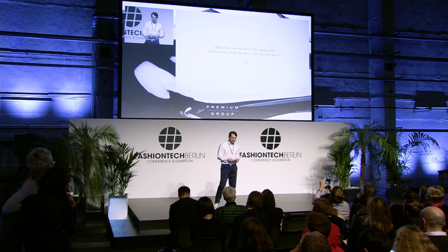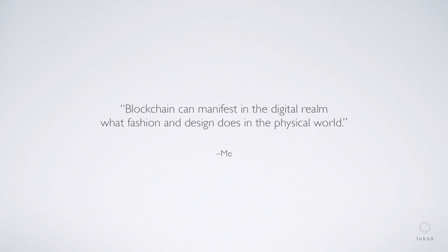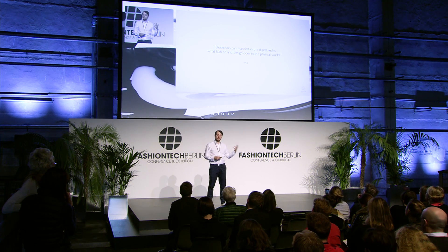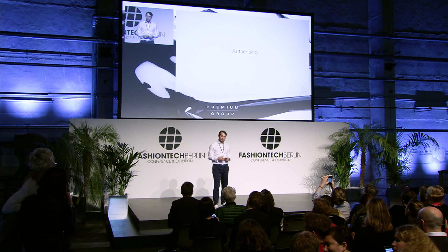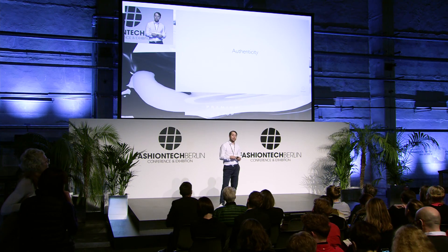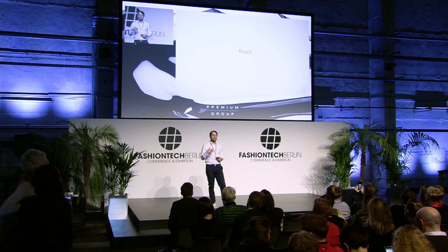Blockchain can manifest in the digital frame what fashion and design does in the physical world. It creates authenticity — you can create objects that are uniquely identifiable, with only one single item. You can put chips in objects and make them unique and uncounterfeitable, because you cannot copy the chip or the private key on it. You have a way higher reach, because subtly you can interact with the second, third, and tenth owner of a product. Even if you don't know who's behind that address, you can reach them, send discount tokens, incentivize them to come back, or send them messages.